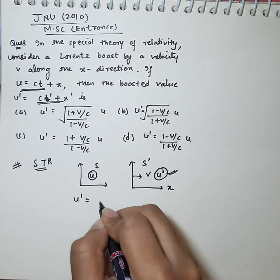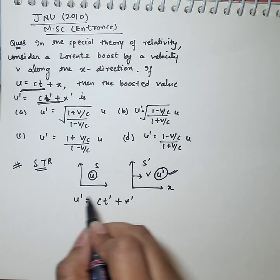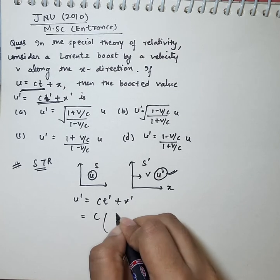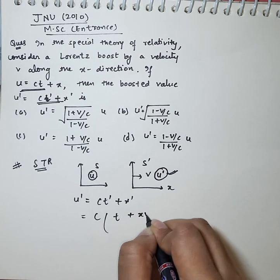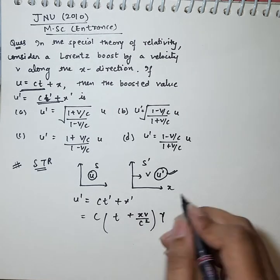u' will come from ct plus x'. Now, we know that we have to do the x direction transformation. So we have to calculate t', which will come from ct plus xv by c square times gamma. Gamma is the Lorentz factor.